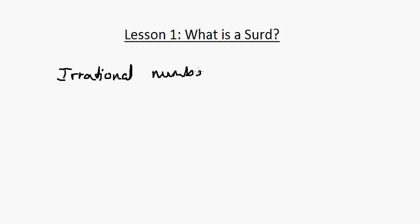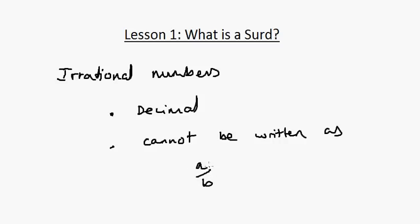Irrational numbers—so what is an irrational number? It is the complete opposite of a rational number. So it can be a decimal, but it cannot be written as a over b where a is an integer and b is an integer.